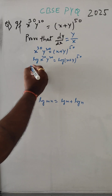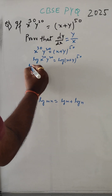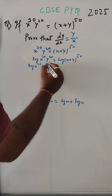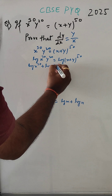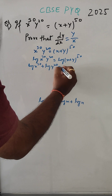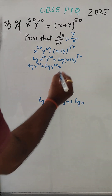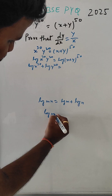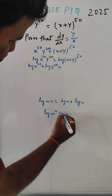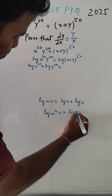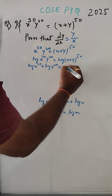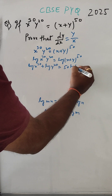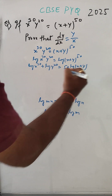So, like that we can do here: log x to the power 30 plus log y to the power 20. And here, we know log m to the power n equals n log m. So here we can write 50 log of x plus y.